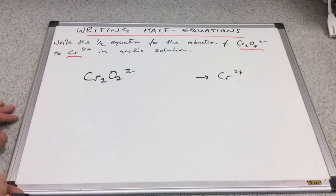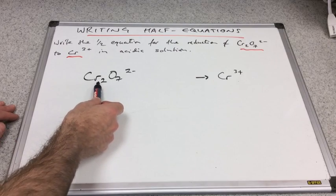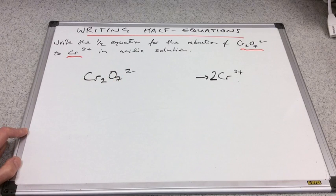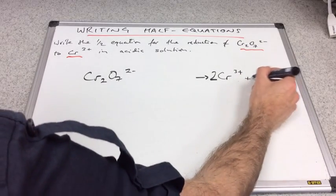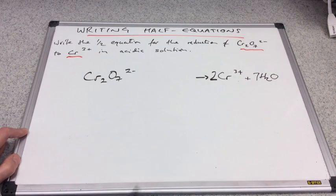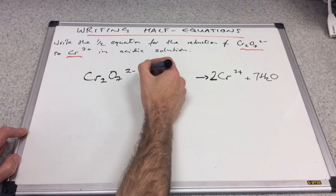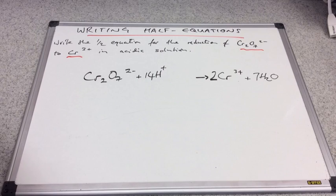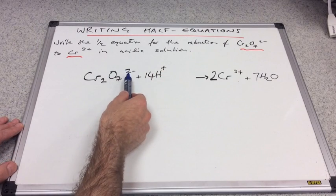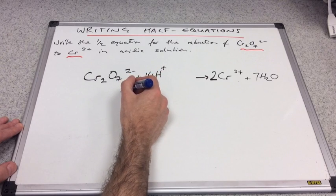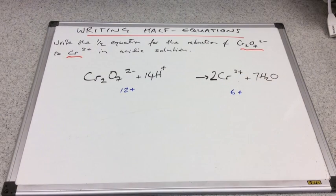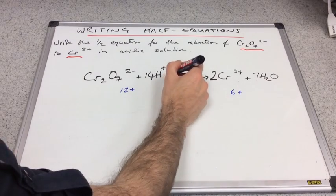So remember the first thing we'll have to do is balance the atoms. Well straight away you can see Cr2 but only Cr there. So we needed 2 in front of that. 7 oxygens. What can we use to sort oxygens out? Well it's water. So we need 7 waters. And that's introduced 14 H's. So we need 14 H pluses on the left hand side. So the atoms now all balance. We'll now look at the charge. So we'll work out the charge on the left. 2 minus with 14 plus leaves 12 plus. And 2 times 3 plus is 6 plus. So how many electrons are we going to need? Well it's obviously 6.